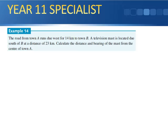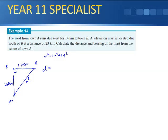Example 14: a road from town A runs due west for 14 kilometers to town B. A television mast is located due south of B at a distance of 23 kilometers. This forms a right angle. Calculate the distance and bearing of the mast from town A. Using Pythagoras: d² = 14² + 23², so d = 26.925, approximately 27 kilometers.